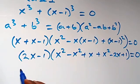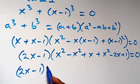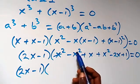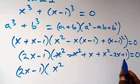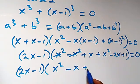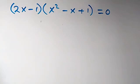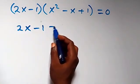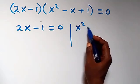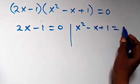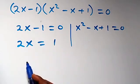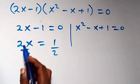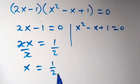Simplifying further, we have two x minus one, times bracket where x squared minus x squared cancel out, and rearranging we get x squared minus x plus one, close bracket equals zero. So we have two sub-cases: two x minus one equals zero, giving two x equals one, so x equals one half.